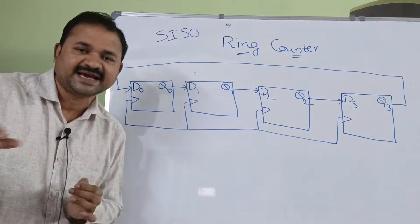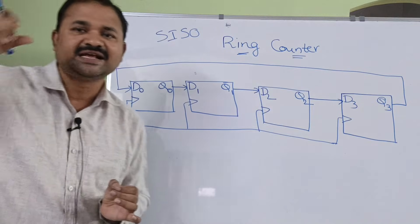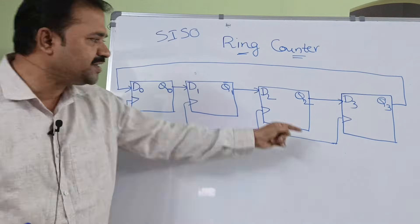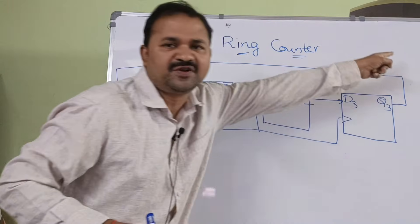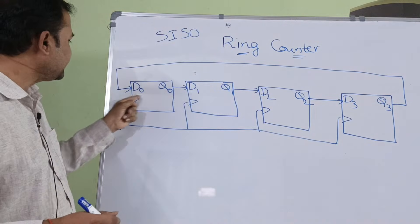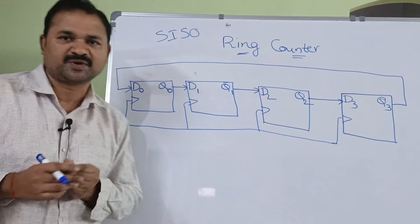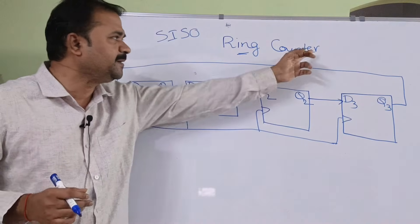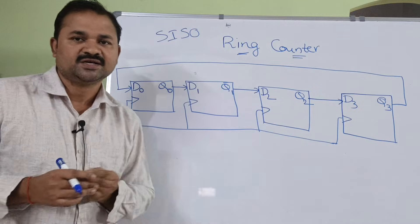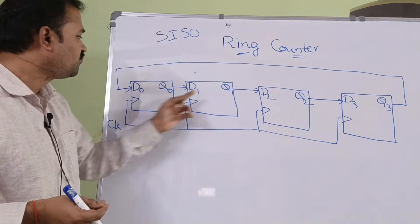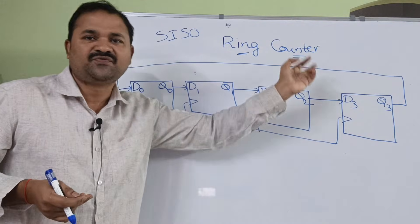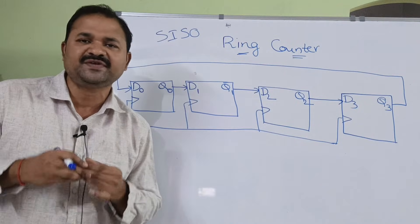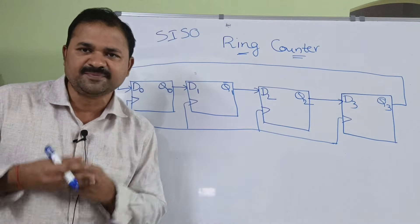In a SISO shift register, the last flip-flop produces the output. But in a ring counter, the output of the last flip-flop is supplied as input to the first flip-flop. This is the diagram for a 4-bit ring counter, so we have taken 4 D flip-flops. For a ring counter, it is better to use a D flip-flop, with the help of which we can store some data.